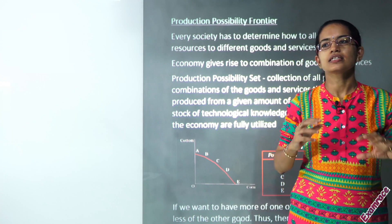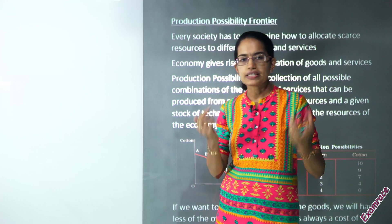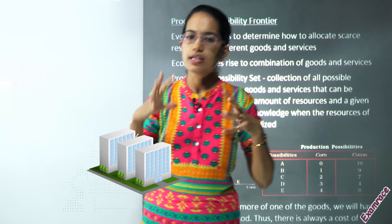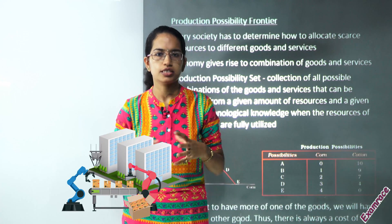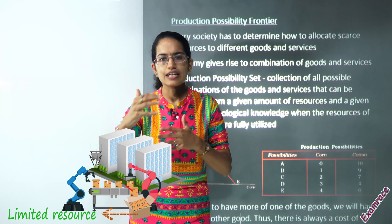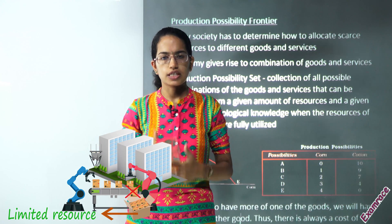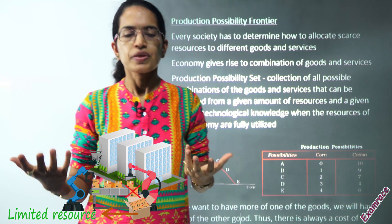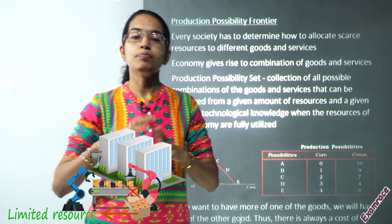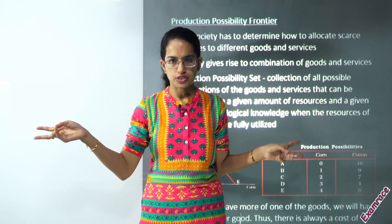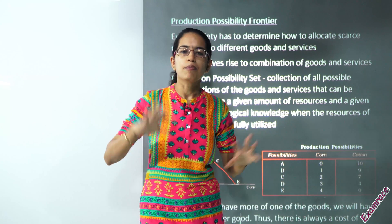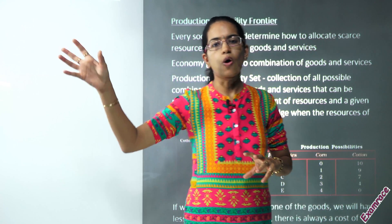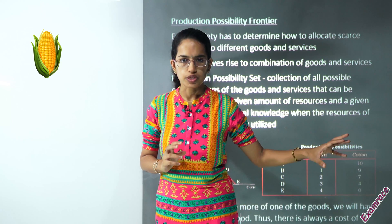The idea, as we understand the basics of microeconomics, focuses on limited or scarce resources. So with those limited or scarce resources you have the option of production. Under production, let's say you have two possibilities — you can produce either corn or you can produce coconut.